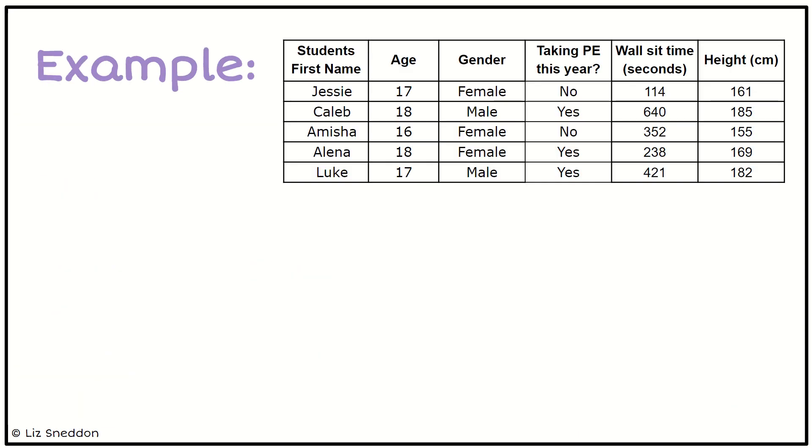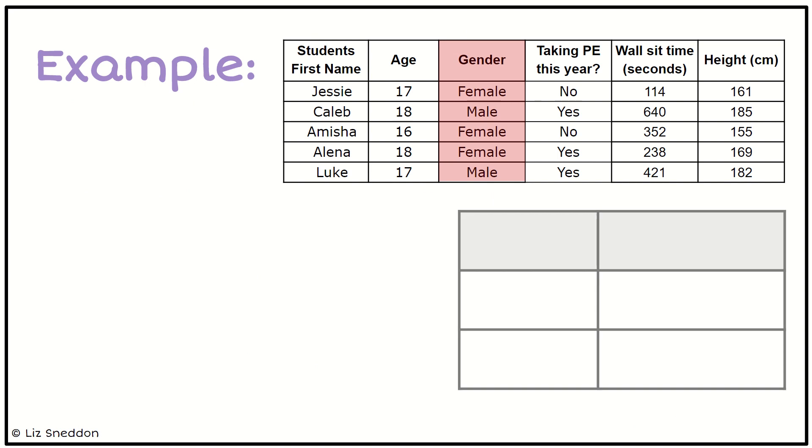So here's an example. We've got our Walsat data, and I'm looking here at gender. So this is what I want to summarize. So I'll make myself a little frequency table.